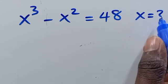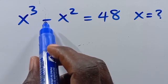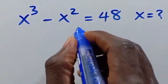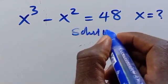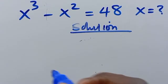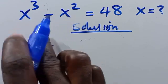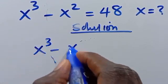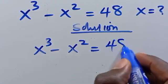Hi, what is the value of x given that you have x to the power of 3 minus x squared equals 48?